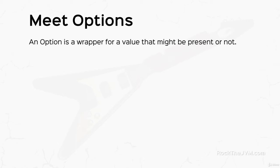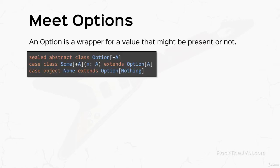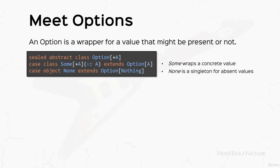An option is a wrapper for a value that might be absent. This is the definition of the option type in Scala, which is extended by two case types: a case class Some, which wraps a concrete value, and the case object None, which means the absence of a value. This option type is strikingly similar to the Maybe type from a previous exercise, but we're approaching options here with a different philosophy — options mean the possible absence of a value, not collections with at most one element.